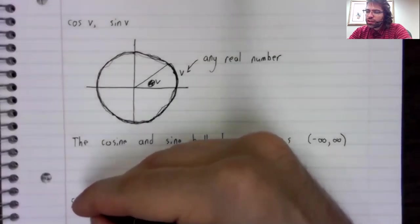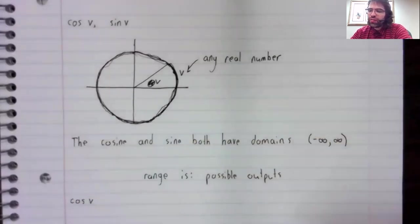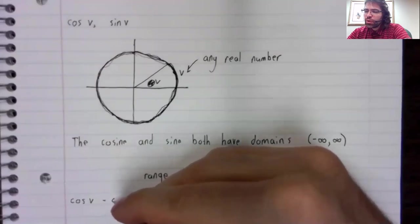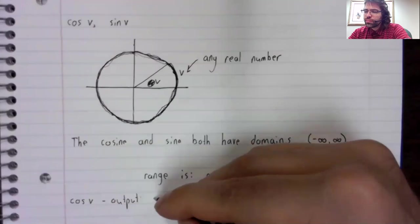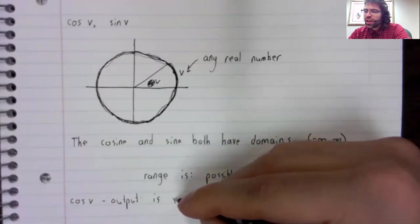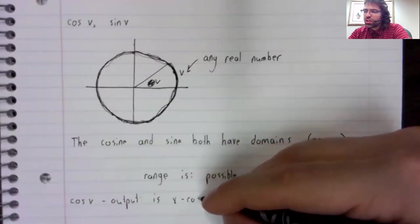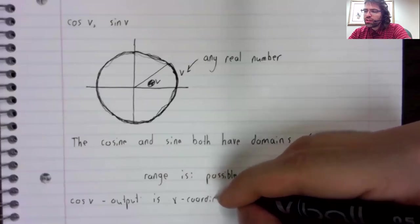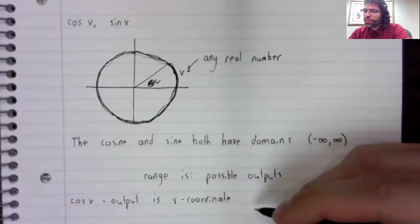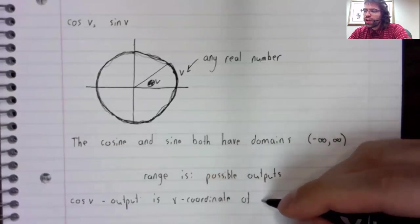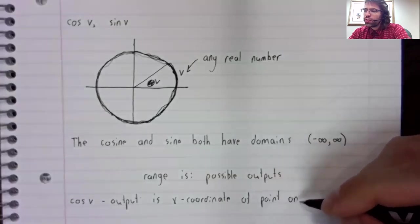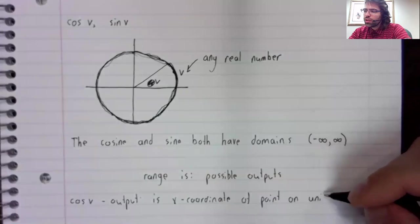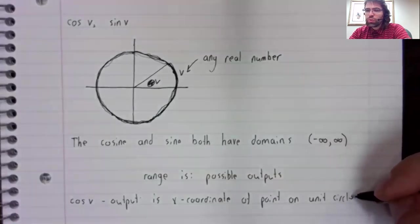If you're looking at the cosine of v, remember that your output is the x coordinate of a point on the unit circle.